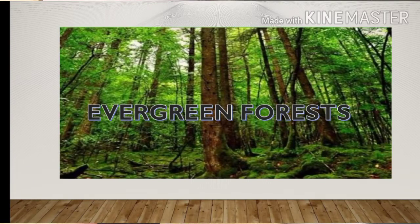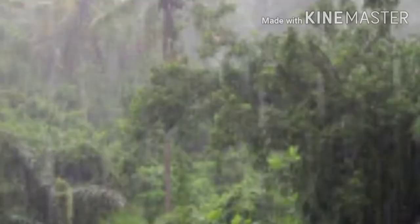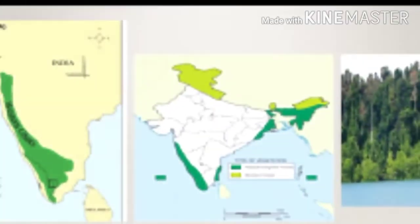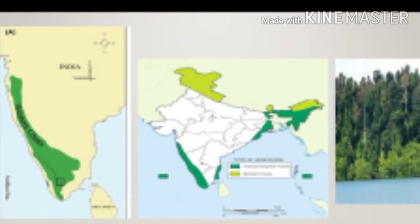Evergreen forests are very, very dense — you can see here in the image. These forests are found in areas that receive heavy rainfall. In India, these forests are found on the slopes of the Western Ghats, the hills of northeast India, and the Andaman and Nicobar Islands — you can see here on the map.